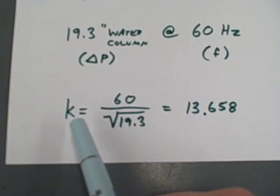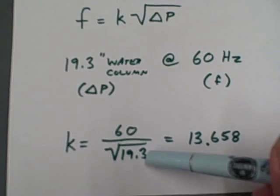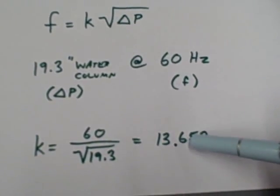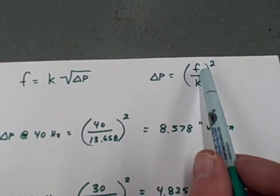Now taking these figures, I calculated a value for k, a constant proportionality, given the frequency and the differential pressure measured earlier. This constant, we can now plug into the equation and solve for the amount of differential pressure given any number of different frequencies.